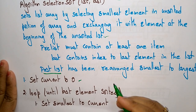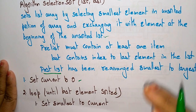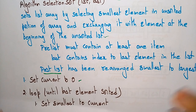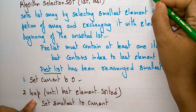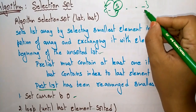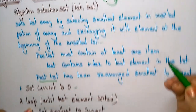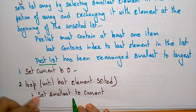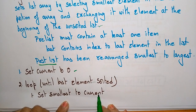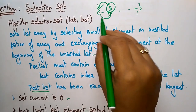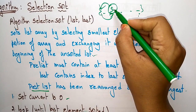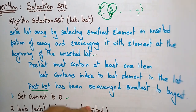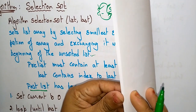Now coming to the algorithm: set current to zero — the pass, the traversal of the data element, is initialized to zero. Take the loop until the last element is sorted — the loop will continue until the last element is sorted. Set smallest to the current — in the array, select the smallest element and assign it as the current element.